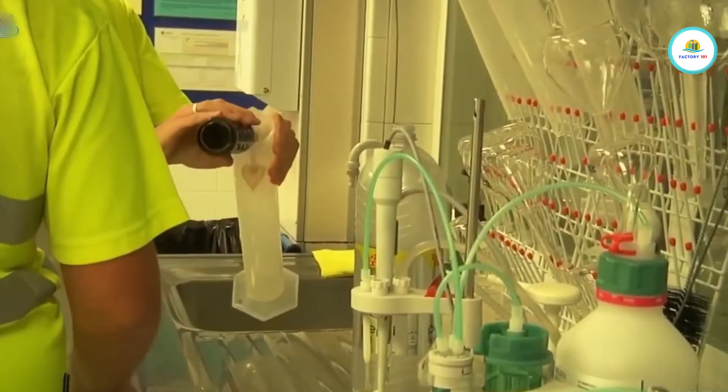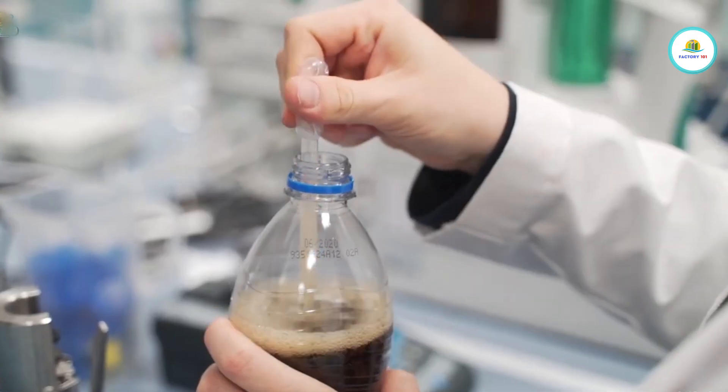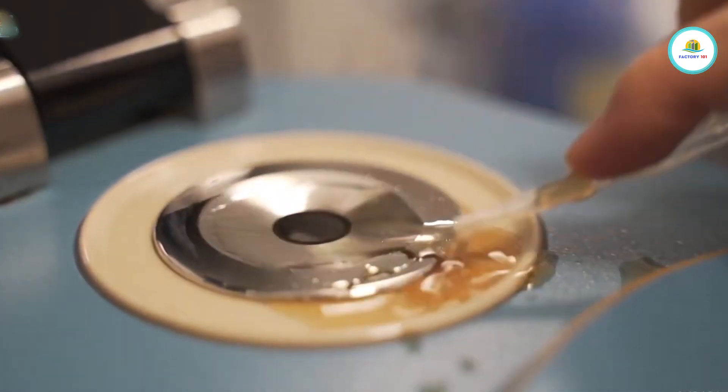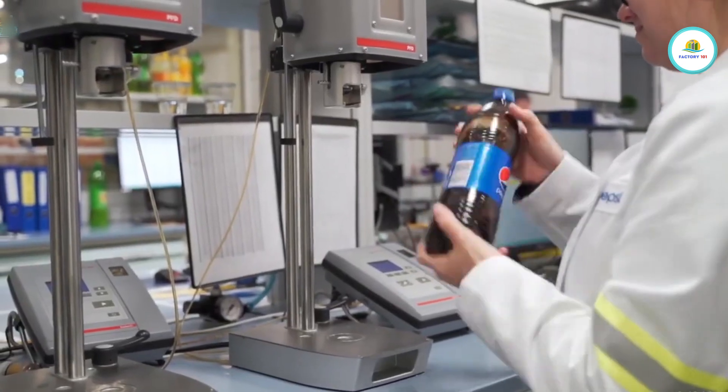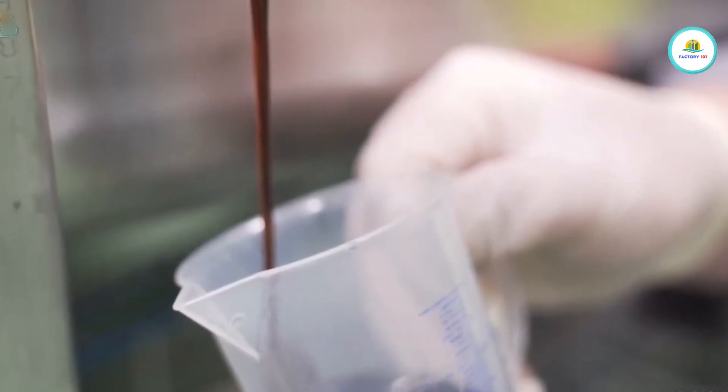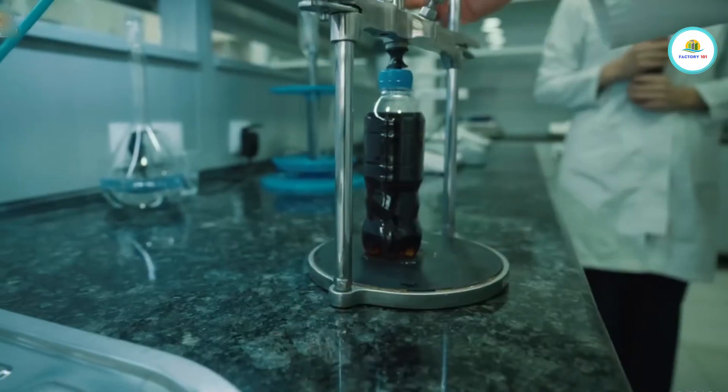Every Pepsi factory has a dedicated quality lab on site. Technicians check CO2 levels, sugar content, acidity, flavor, consistency, and even bottle strength. If even one parameter is off, the batch is rejected. That's why Pepsi tastes the same whether it's in a bottle, can, or fountain drink.